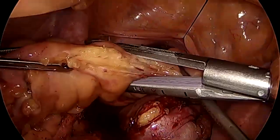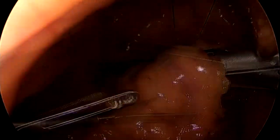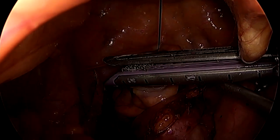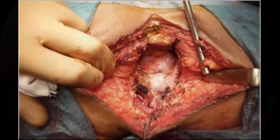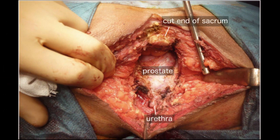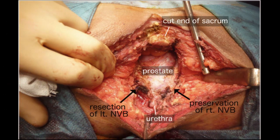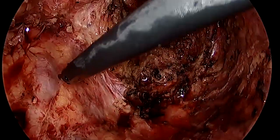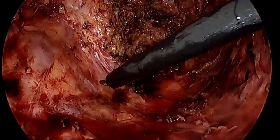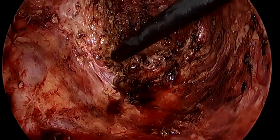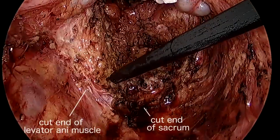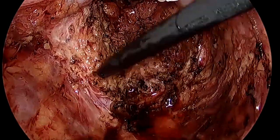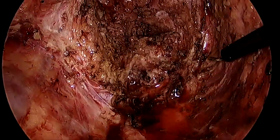Afterwards, the patient's body position was converted to the jackknife position. Next, we proceeded with the transperineal approach. The sacrectomy was performed at the level of S5. The left side neurovascular bundle was resected under direct vision. This is a final view from the transabdominal side. The pelvic autonomic nerves, the cut end of the sacrum, and the levator ani muscle were seen.